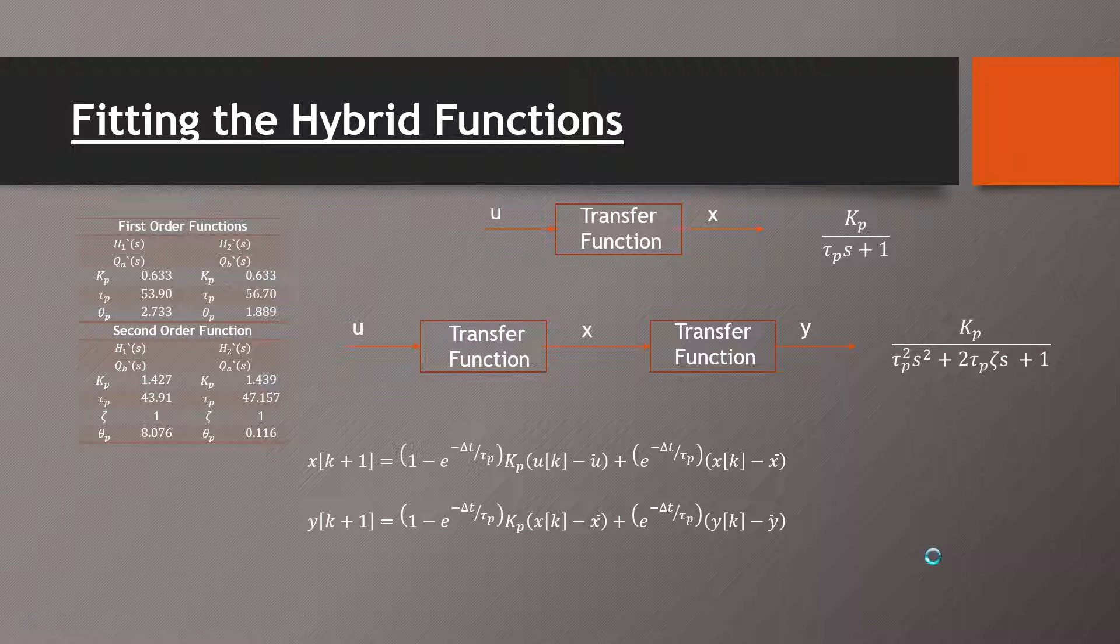To continue fitting our hybrid functions, we collect data in a doublet test and run this through some model functions. First, we take our input u and run it through a transfer function as shown on the top, and this will give us an x or a height of the bottom tank. This was for the first order functions in our model.